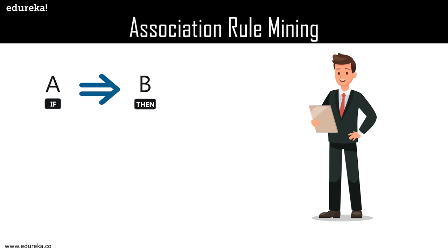Association rule mining is all about building rules. A relationship where we find the association between two items is known as single cardinality. But what if the customer who bought A and B also wants to buy C, or a customer who bought A, B, and C also wants to buy D? In these cases, cardinality increases and we can have many combinations. With 10,000 or more items, imagine how many rules you would need to create — that is why association rule mining uses measures to avoid creating tens of thousands of rules, and that is where the Apriori algorithm comes in.